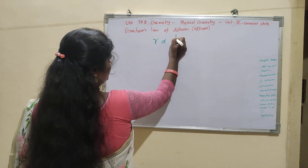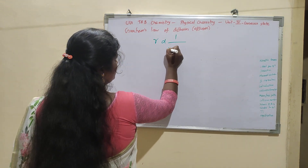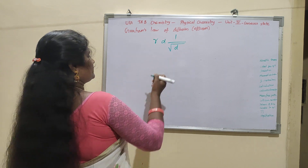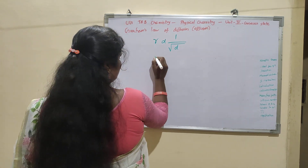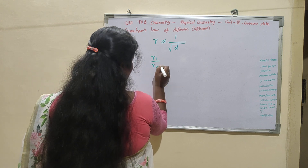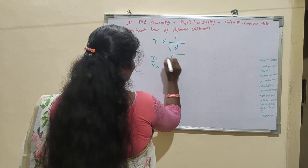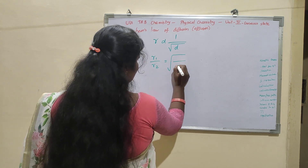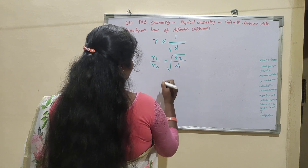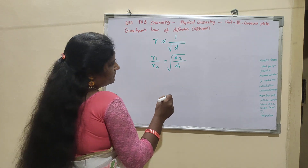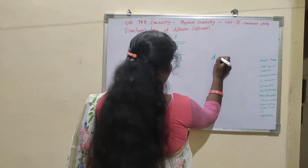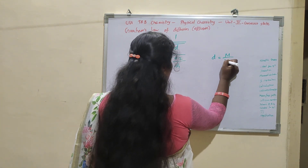R is inversely proportional to the square root of the density. So R1 by R2 is equal to the square root of density of d2 by d1. What is R1 by R2? The density is mass by volume.